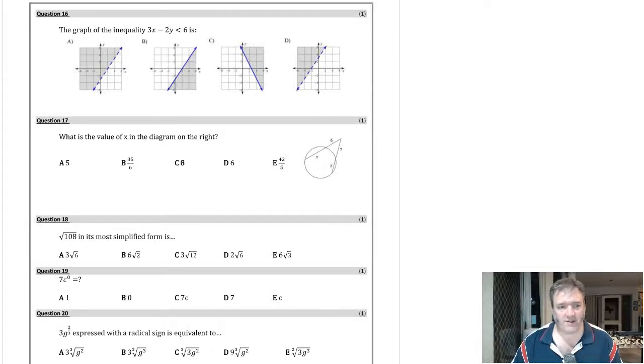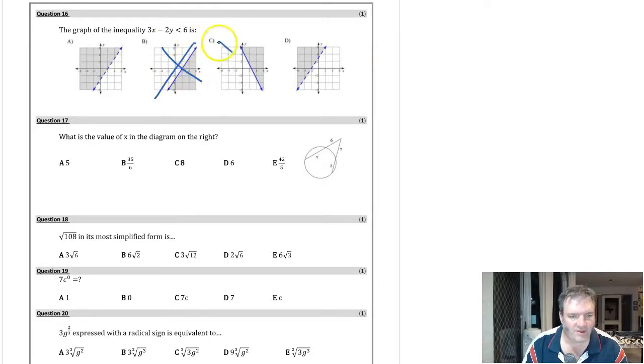Back with the third video, just going through our practice exam. The graph of the inequality 3x minus 2y is less than 6 is given by one of these. First of all, it's a less than equation, so we can rule out two of them straight away. We can rule out the solid lines, because solid lines are for greater than or equal to or less than or equal to questions.